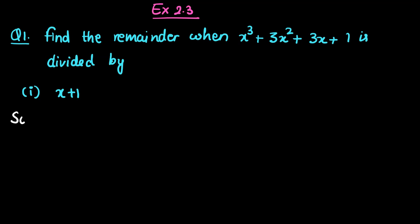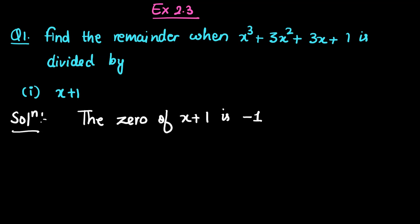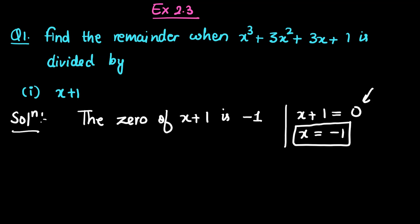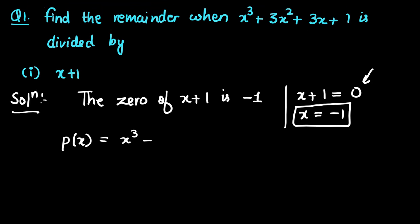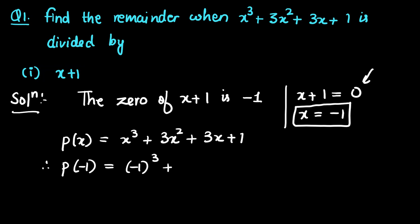There is a specific pattern that you need to follow. First, write down the zero of x + 1, which is minus one. How has minus one come? Because we equate x + 1 with zero, so x equals minus one. Now we put this x = -1 into the polynomial p(x) = x³ + 3x² + 3x + 1. Therefore, p(-1) = (-1)³ + 3(-1)² + 3(-1) + 1.